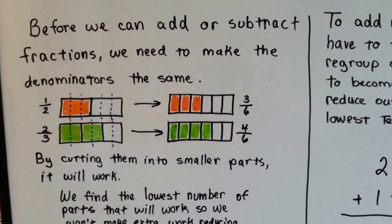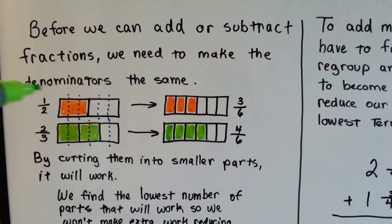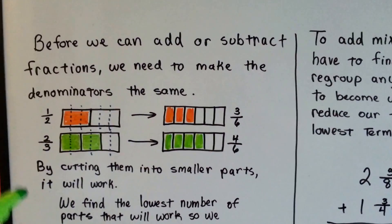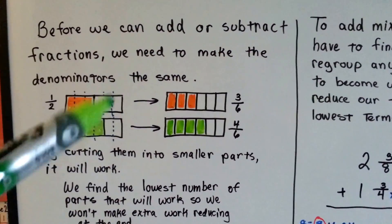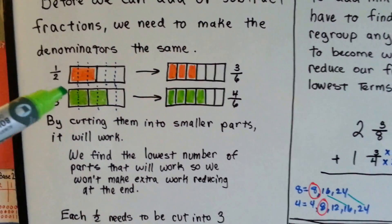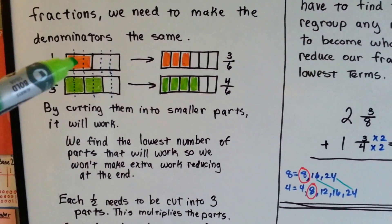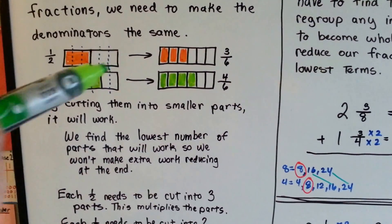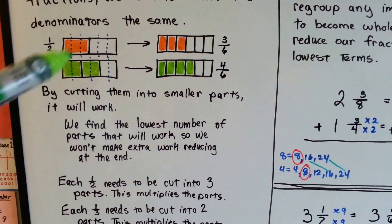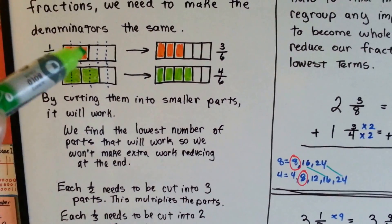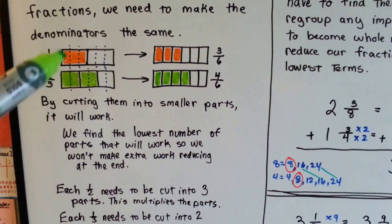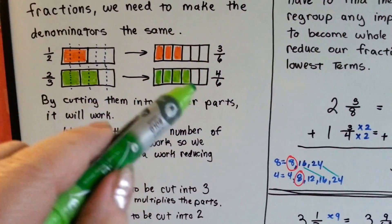Before we can add or subtract fractions, we need to make the denominators the same. If we have a half and a third, or two-thirds, we can't combine them because they're in different cuts. By cutting them into smaller parts, it'll work. We find the lowest number of parts that will work, so we won't make extra work reducing at the end. Each half needs to be cut into three parts. Each third needs to be cut into two parts. This multiplies the parts. We've multiplied the two into three parts, and we've multiplied the thirds into two more parts. So we're multiplying the two by three and the three by two, and they're becoming six parts.